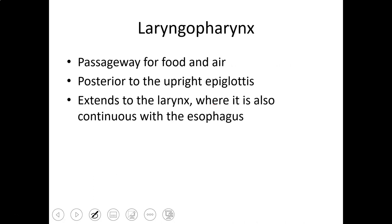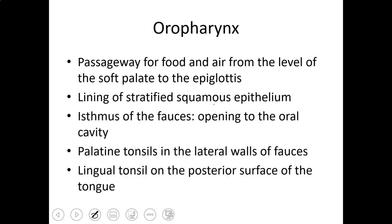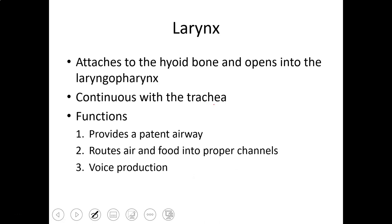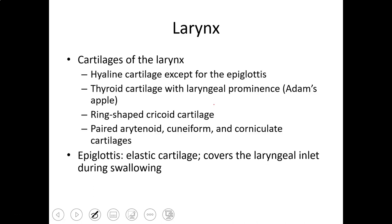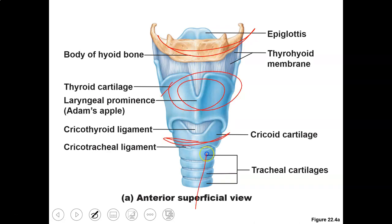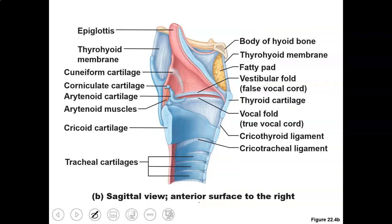The laryngeal pharynx is a common passageway posterior to the epiglottis. The oral pharynx has the palatine and lingual tonsils. The larynx is where the hyoid bone starts and continues with the trachea — it keeps the airway open. The larynx includes the hyoid bone, thyroid cartilage, cricoid cartilage, and then the trachea. In the back you can see the arytenoid cartilages and the epiglottis. You can also see the vocal folds.